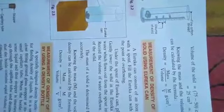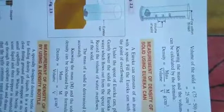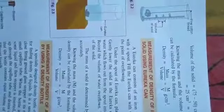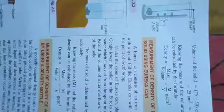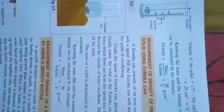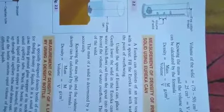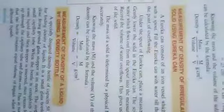If the water level rises to 75 cm³, the volume of the solid is 75 − 50 = 25 cm³. If the mass is 50 gram and volume is 25 cm³, then the density is 50 divided by 25 = 2 gram per centimetre cube. This is how we determine the density of a solid.